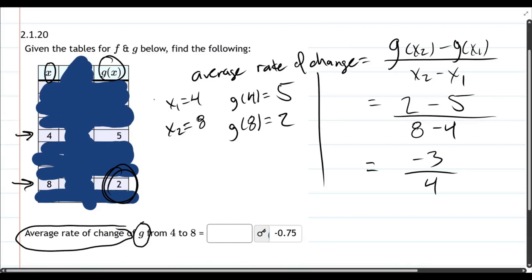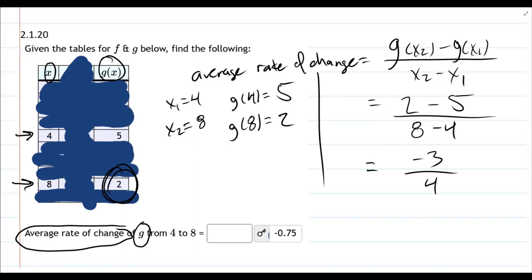So just be careful—read your function correctly. The big mistake I see is swapping x₁ and x₂. As long as you swap it in both the numerator and denominator, you're okay, but I recommend leaving it like this: put your x₂ first and your x₁ second.